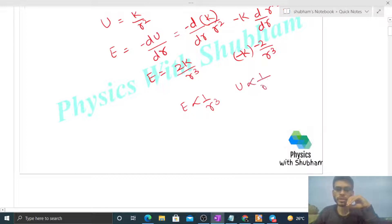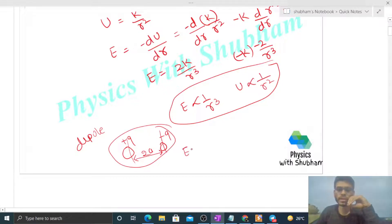This kind of scenario happens in dipoles. Just like in electrostatics, there's an electric dipole where we have +q and -q separated by a small distance. There, the electric field is inversely proportional to r³ and the electric potential is inversely proportional to r². Such behavior occurs in dipoles.